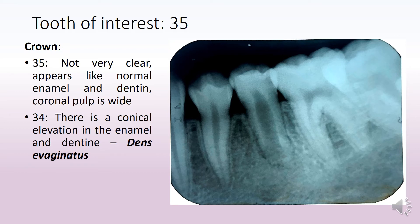There is something more interesting to note in the crown of the first premolar, tooth 34. We notice there is a conical elevation in the enamel — this is called dense evaginatus. It involves the enamel and dentine, and sometimes a portion of the pulp which protrudes out like a protuberance. This conical enamel in tooth 34 would presumably have led to the problem we are seeing in tooth 35.